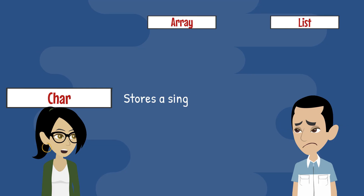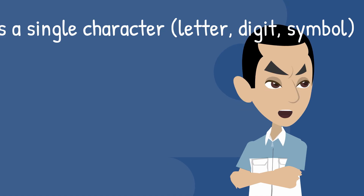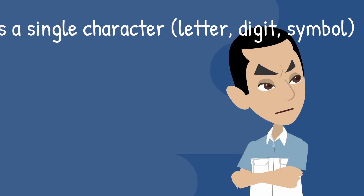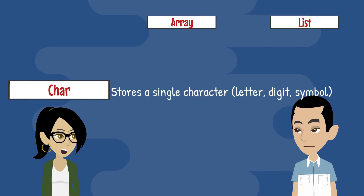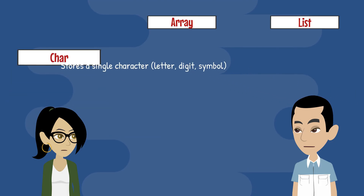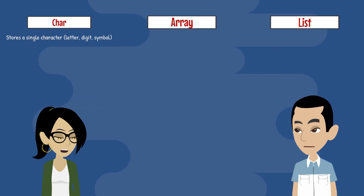A char is just a single character, like a letter or number. Can you explain arrays and lists?